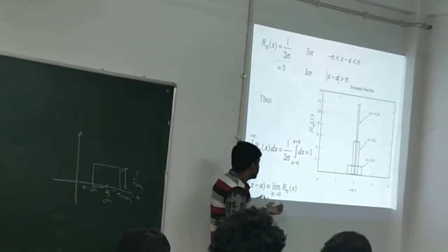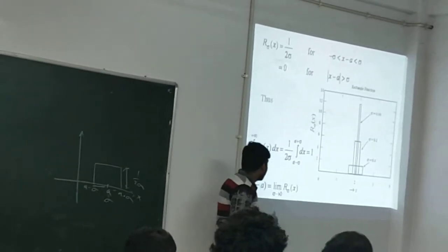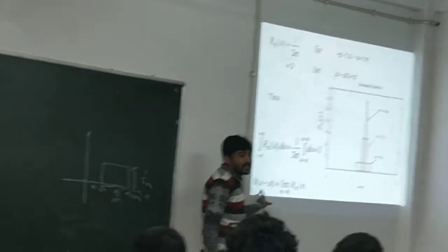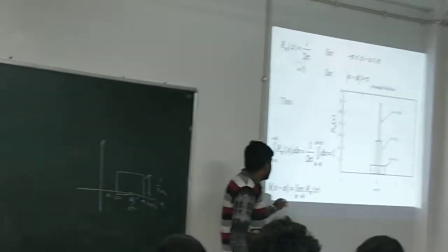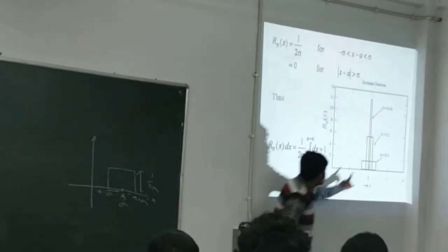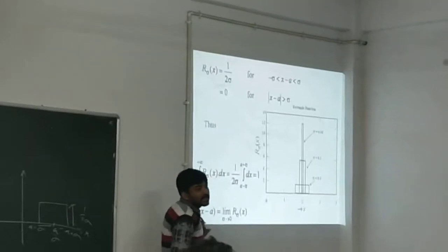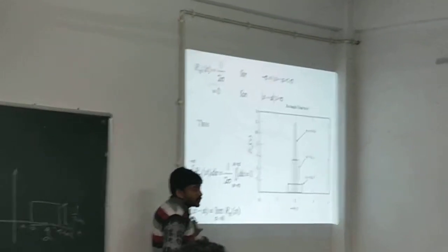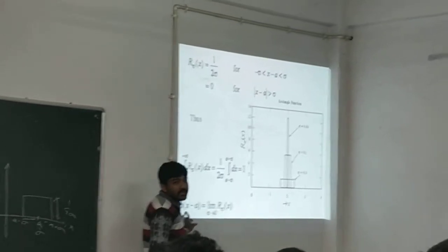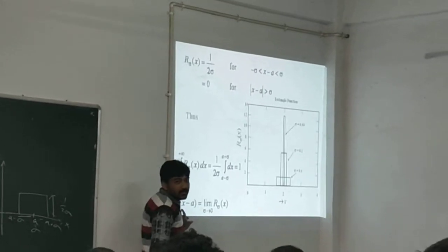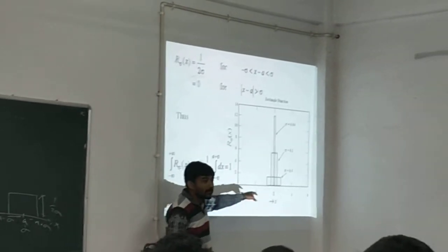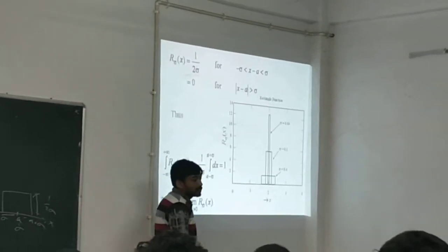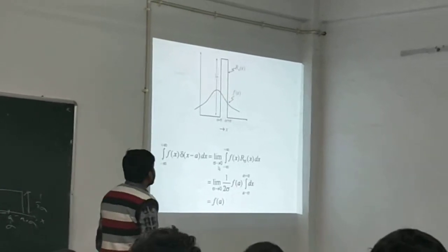As I said earlier, as sigma tends to 0, the function A sigma of X is defined as the delta function. But if we choose this function centered at the origin, then A will be 0. This is actually the delta function displaced from the origin. So the next step.